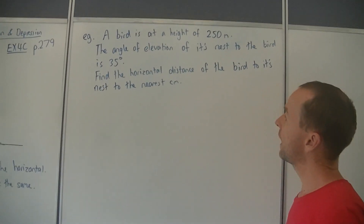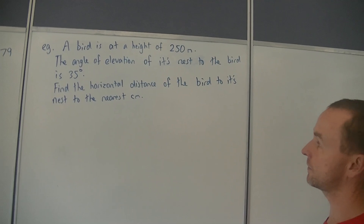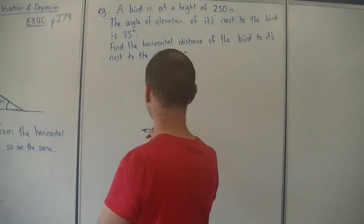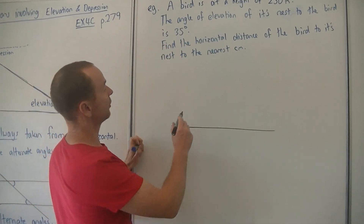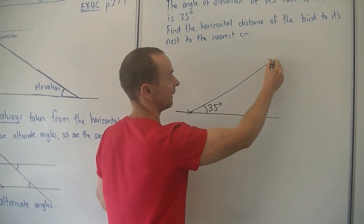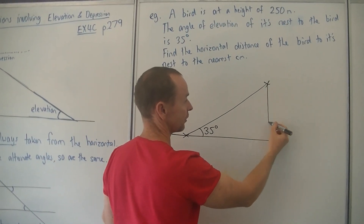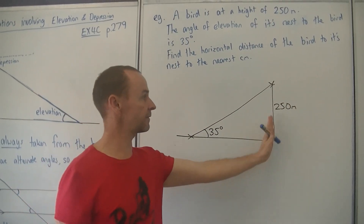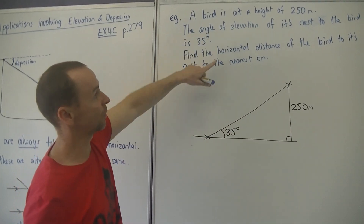Let's do some word questions. A bird is at a height of 250 metres. The angle of elevation of its nest to the bird is 35 degrees. Find the horizontal distance of the bird to its nest to the nearest centimetre. Let's draw a picture first. Here's our ground level, here's our bird's nest. The angle of elevation to the bird is 35 degrees, so there's our line of sight. We know this is 35 degrees and here's our birdie flying up there. It says the bird is at a height of 250 metres, so the vertical height is 250 metres, and there is our right angle. So now we've drawn our triangle with all the information from the words.